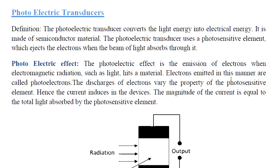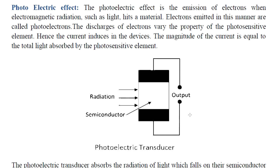Electrons emitted in this manner are called photoelectrons. The discharge of electrons varies the property of the photosensitive element, and hence current is induced in the device. The magnitude of the current is equal to the total light absorbed by the photosensitive element, so the current value is proportional to the light intensity.